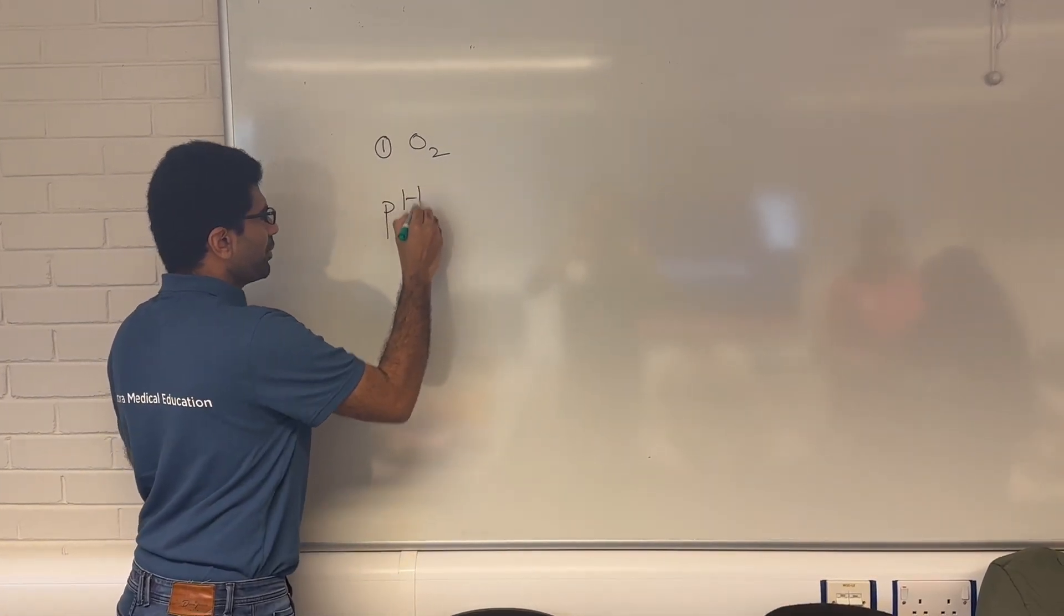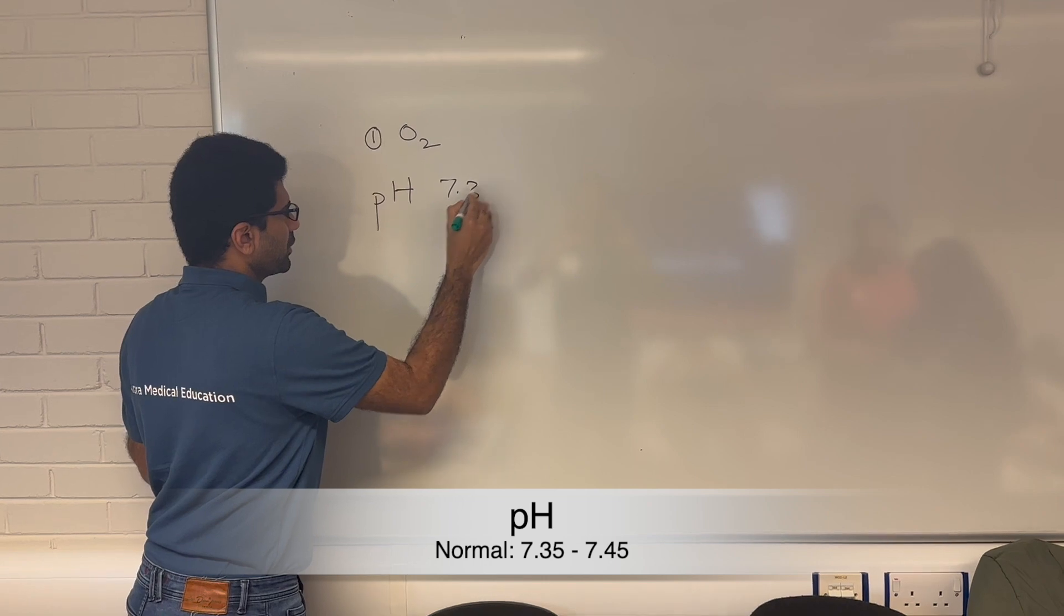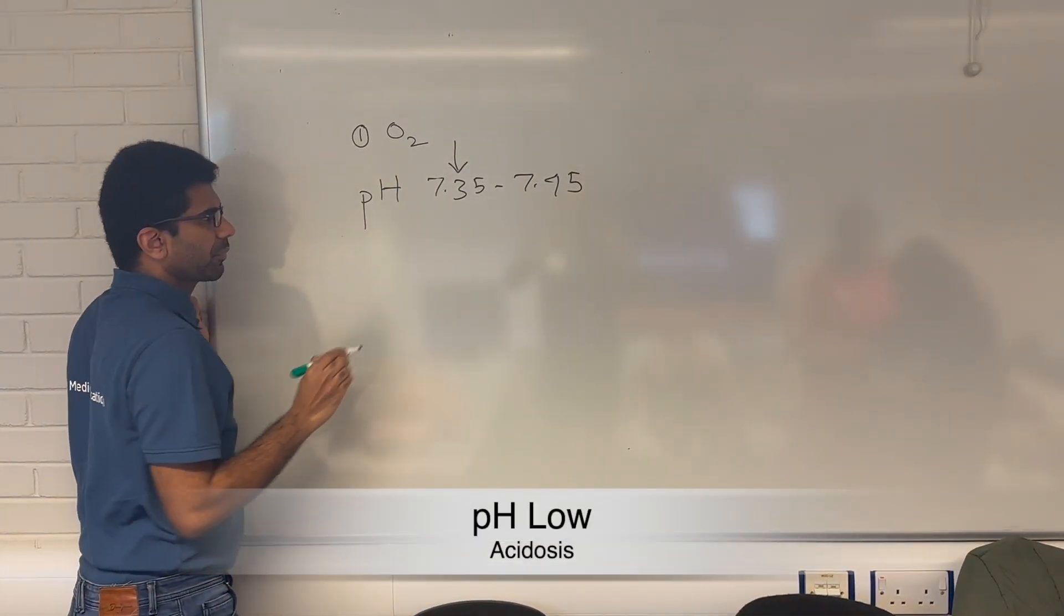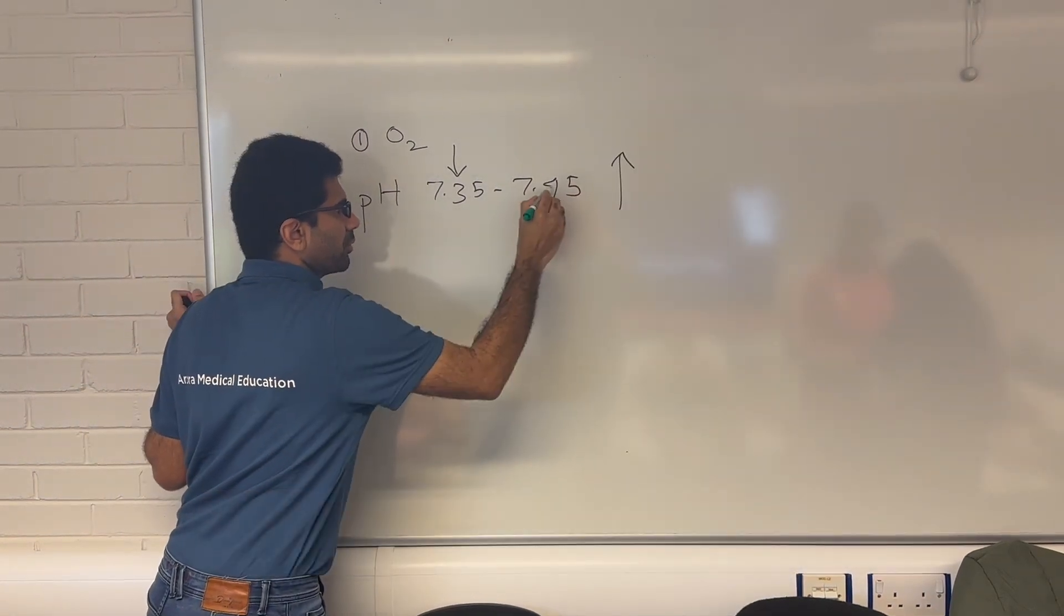So first is pH. What's the normal value? 7.35 to 7.45. Amazing. If it is less, what is that? Acidosis. If it is more, what is that? Alkalosis. Good.